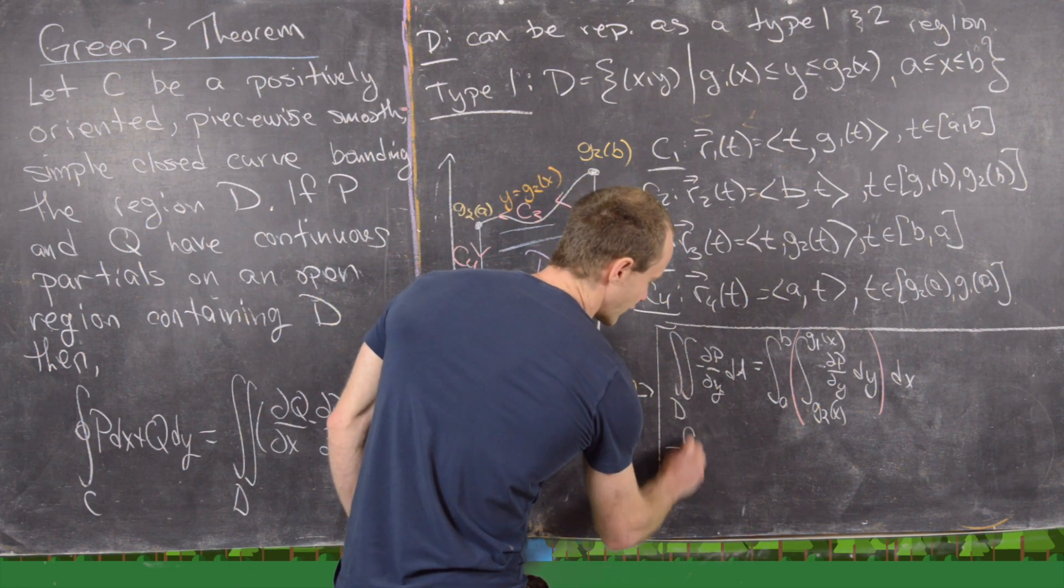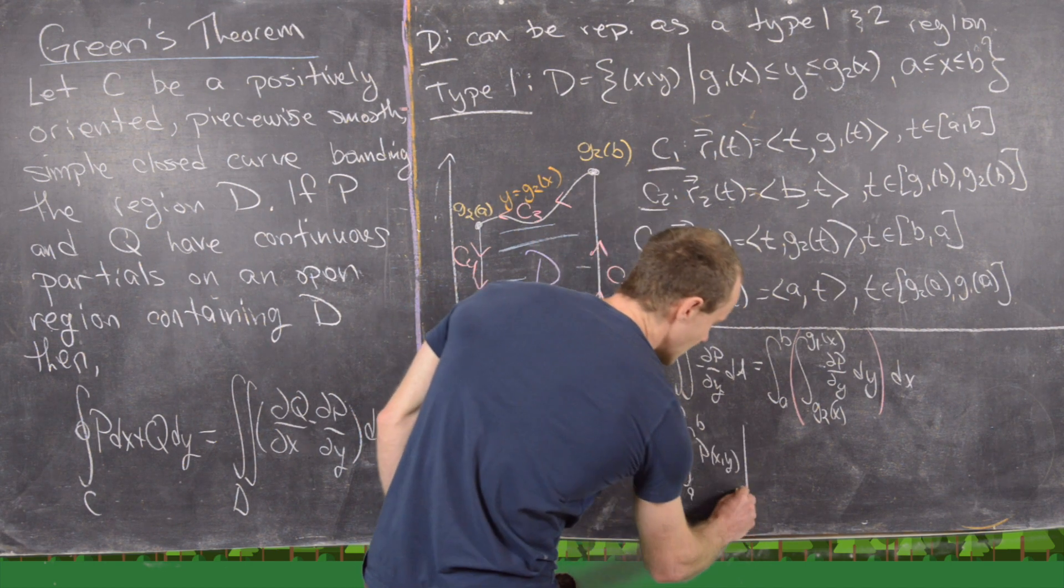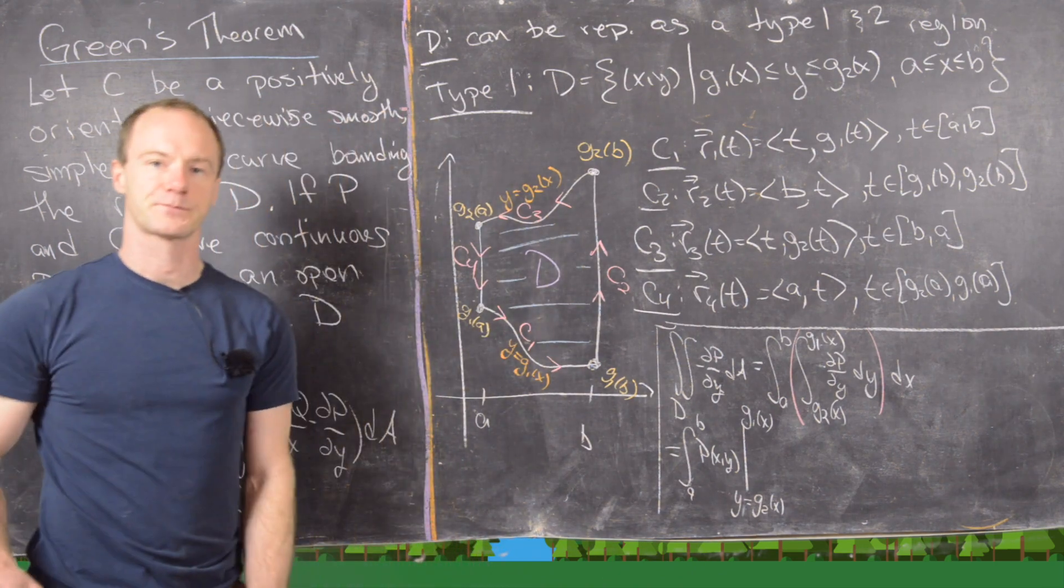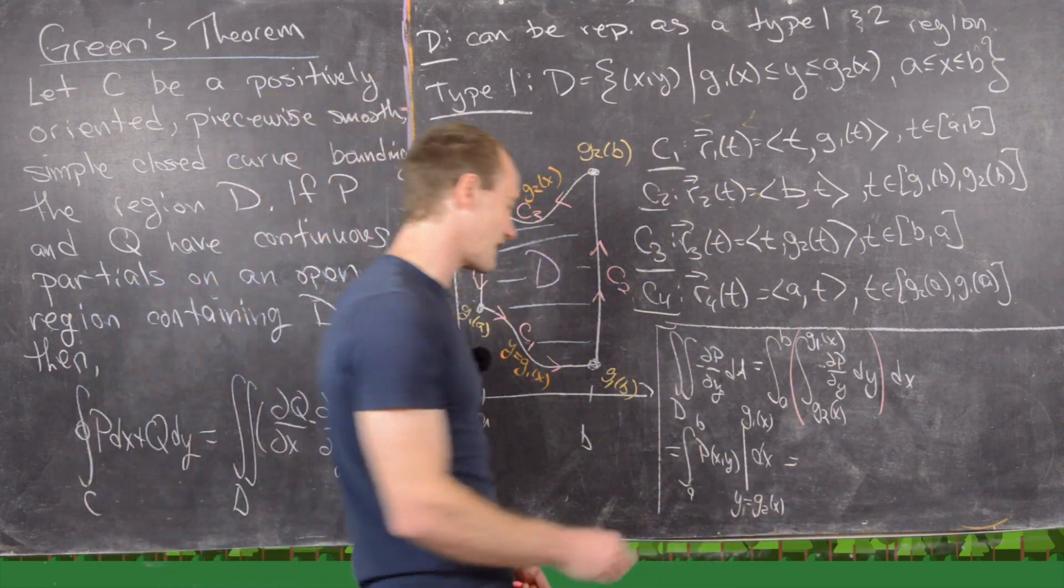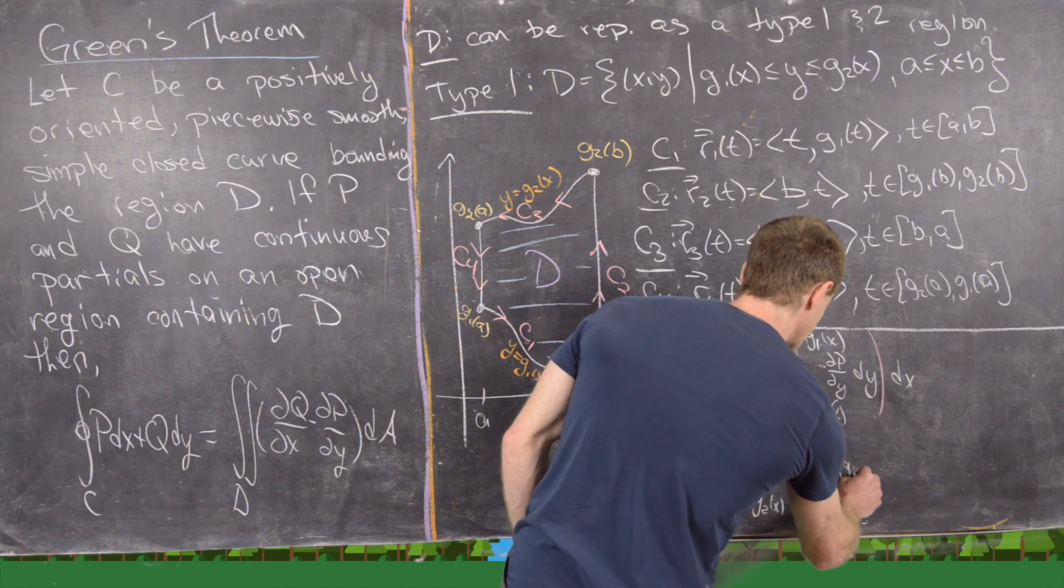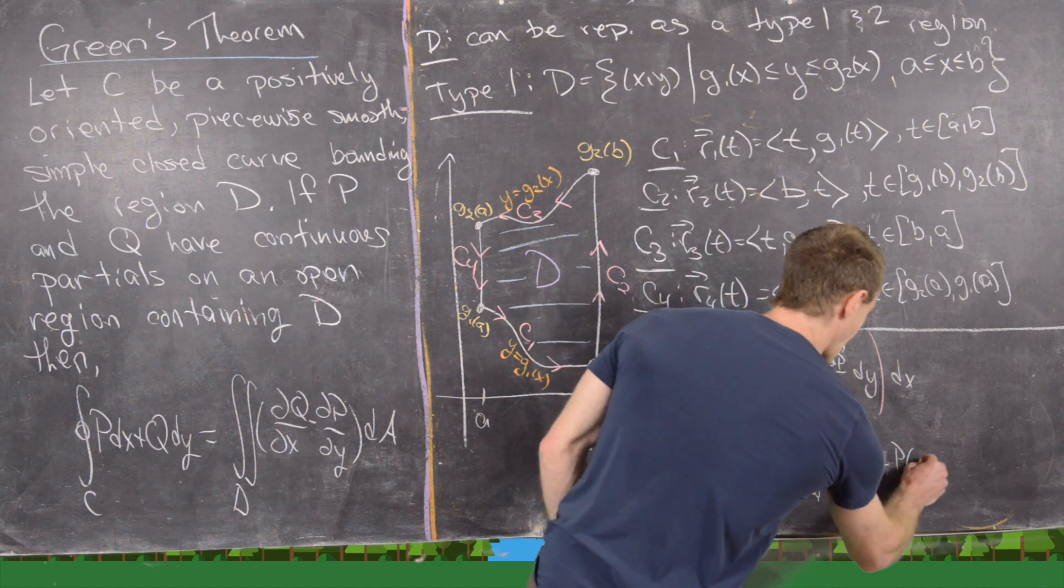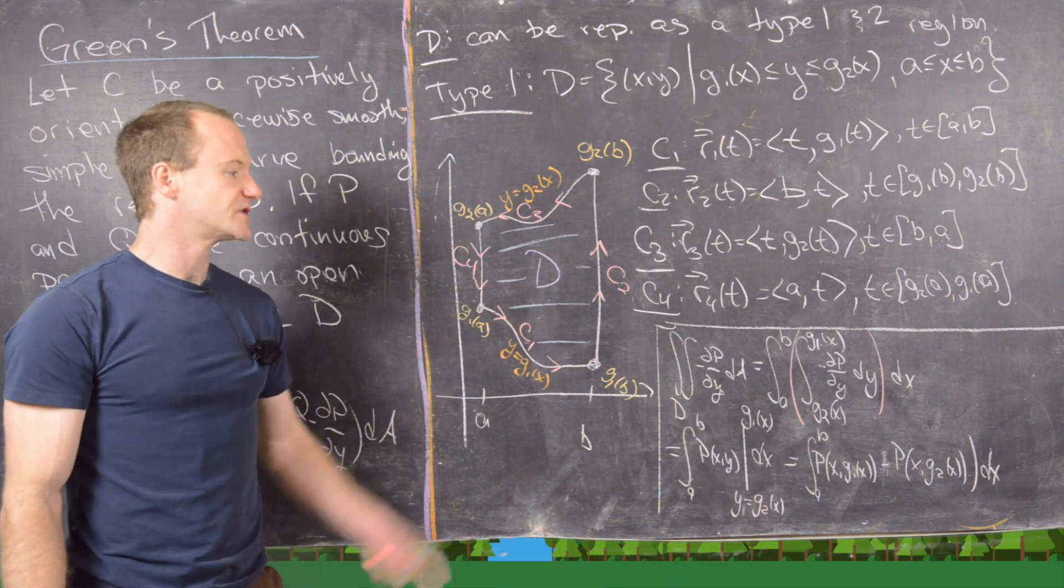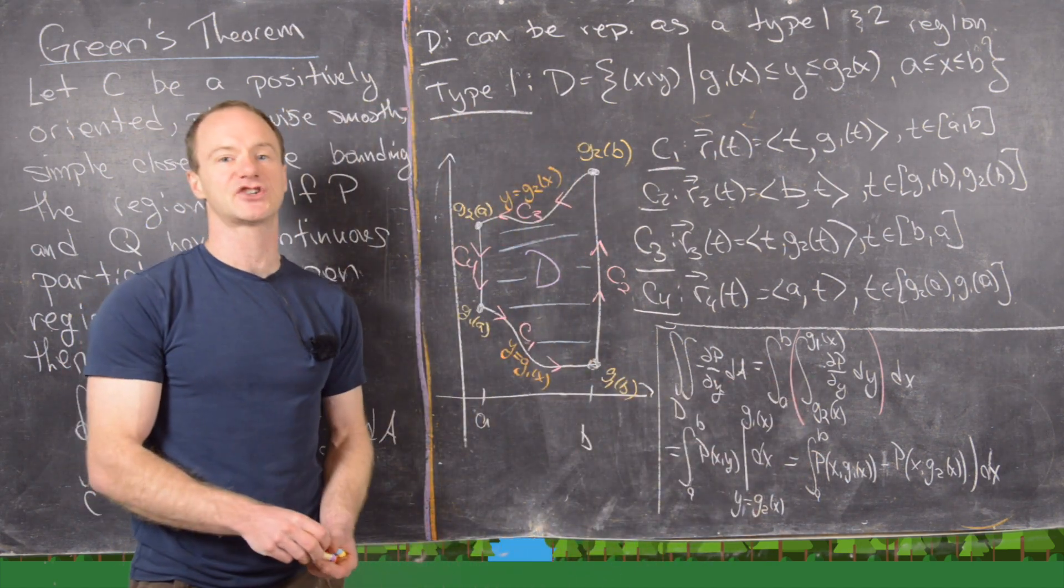So that's going to give us the integral from A to B of the function P of X, Y evaluated from Y equals G2 of X, all the way up to Y equals G1 of X, like that. But now we can write that dX. But notice this is exactly equal to the integral from A to B of P of X, G1 of X minus P of X, G2 of X, dX. So now we're running out of room, but we actually don't have much. So I'm going to erase these couple of steps in the middle and bring that up. And then we'll finish this off.